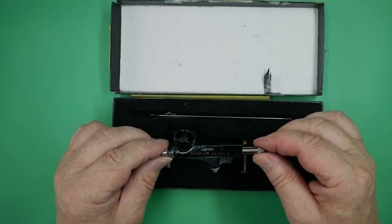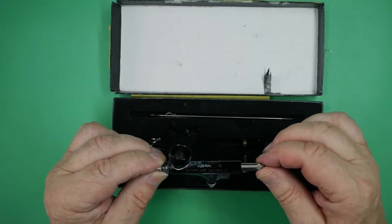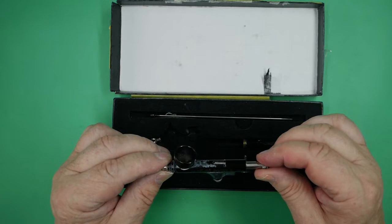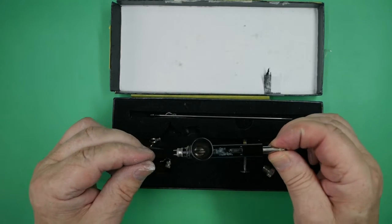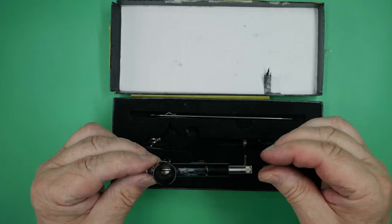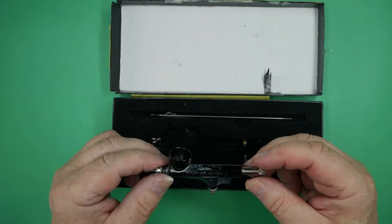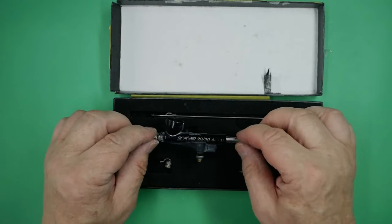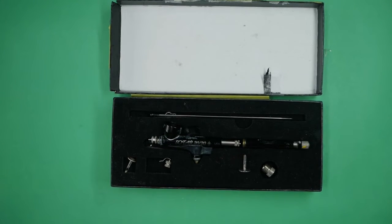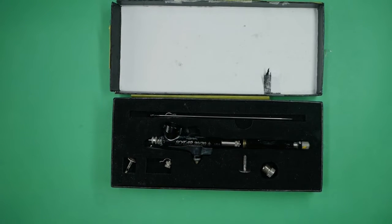I think my first course of action with this airbrush is strip it right down to the bare shell, get it all cleaned up and then start from there. Once we've cleaned all the parts up, have a good look at it and see what we can get sorted. I will go ahead, get this all cleaned up, and as soon as it's cleaned up I will run the video again and we can go through it together and see what is wrong with the airbrush and how we're going to put it right.